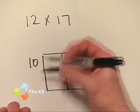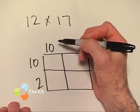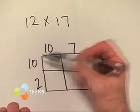Let's break up the 12. Put the 10 up top, two down below. And let's break up the 17. The 10 right here, the 7 next to it. Now we just multiply.